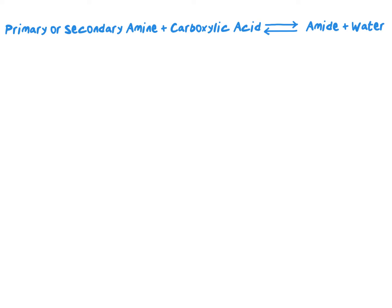I'm going to start by drawing a generic amine molecule. In my generic amine, I'm going to keep one hydrogen present and show the other two as R groups, where R here can be either carbon or hydrogen — it could be a carbon chain, a carbon ring, whatever you like. I'm going to react it with the carboxylic acid. Remember, a carboxylic acid has a COOH group, which can also be shown as a line angle formula with a carbonyl bonded to OH. I'll plug an R group in here, which again can be a carbon or hydrogen, a ring, an aromatic ring — it doesn't matter.